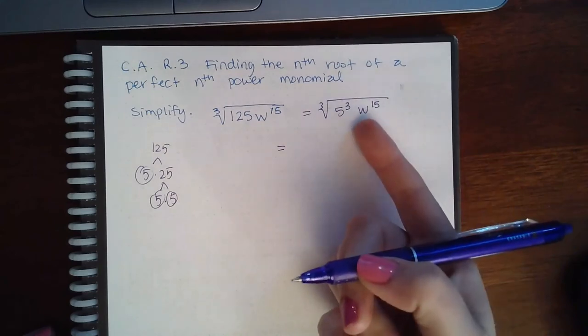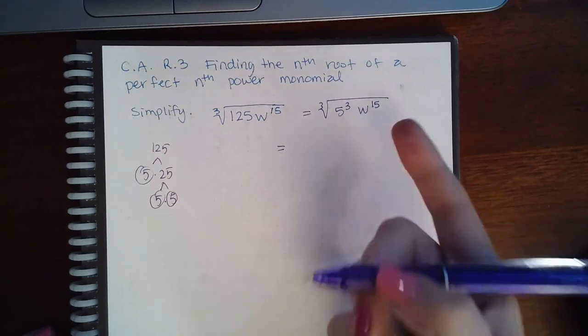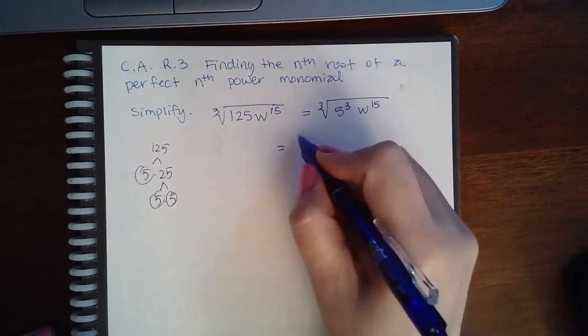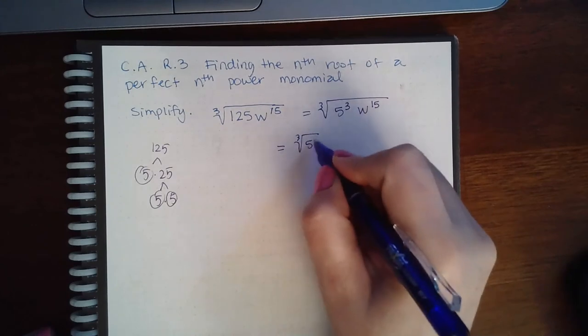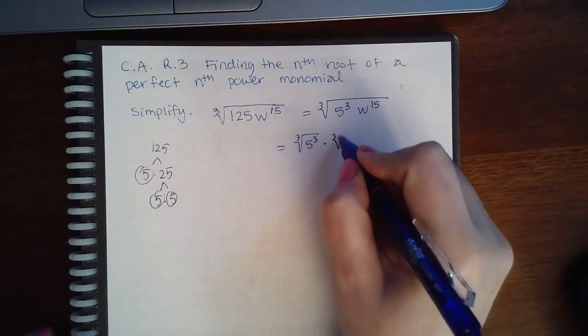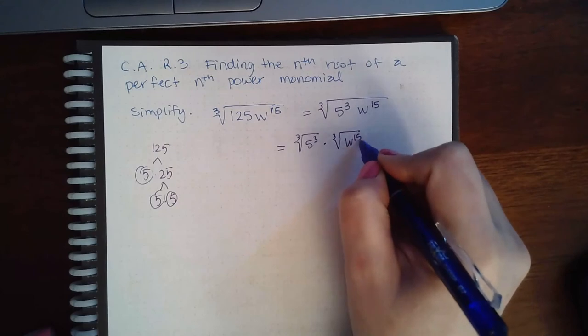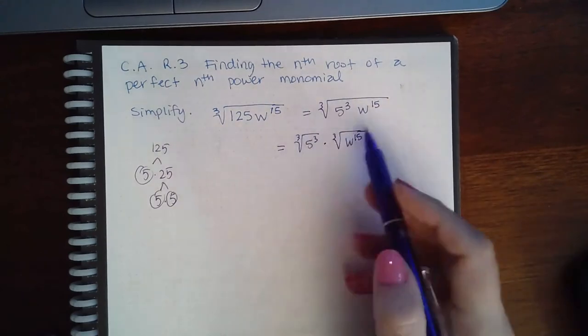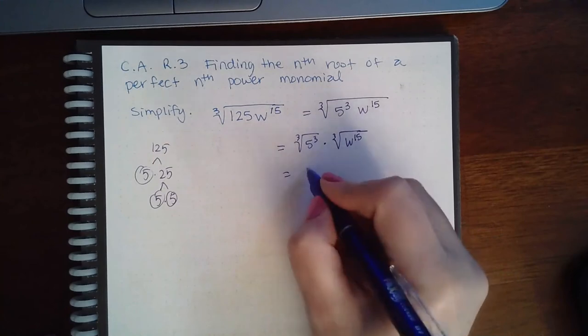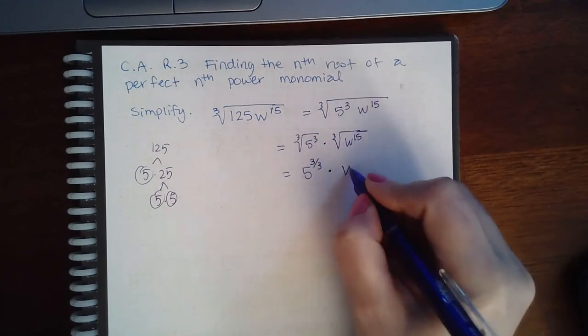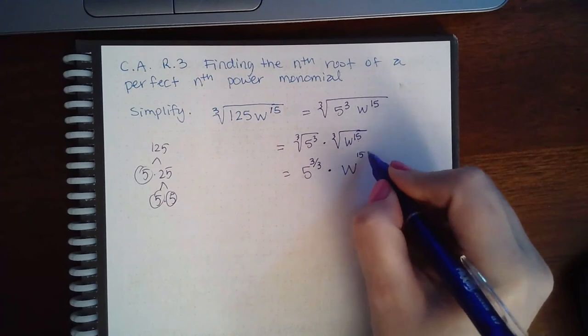It tells you to assume that w is a positive real number. Because these are both real numbers, I can separate this cube root according to that property. When I separate it, I'm going to put the power for this one—power over index—and the same for here, power over index.